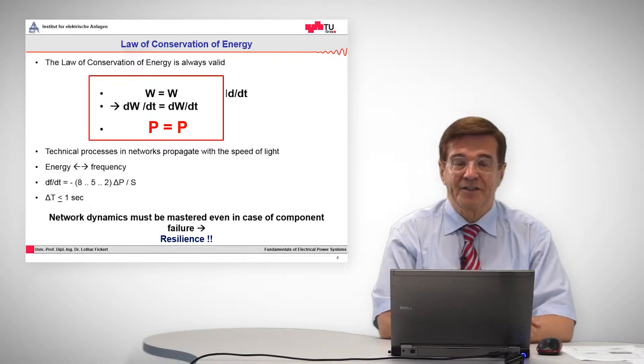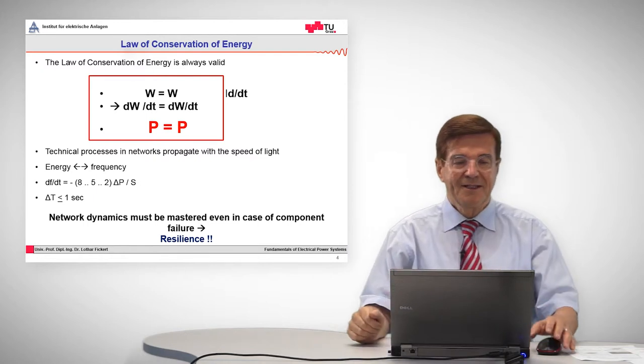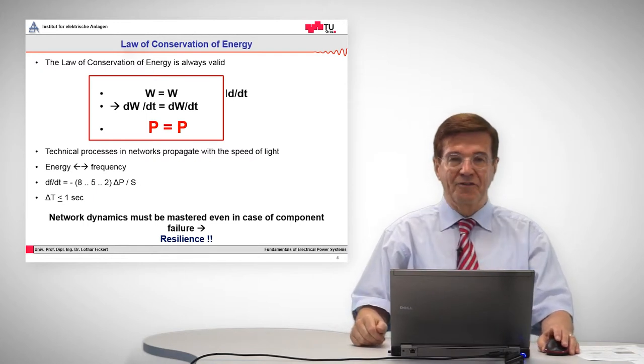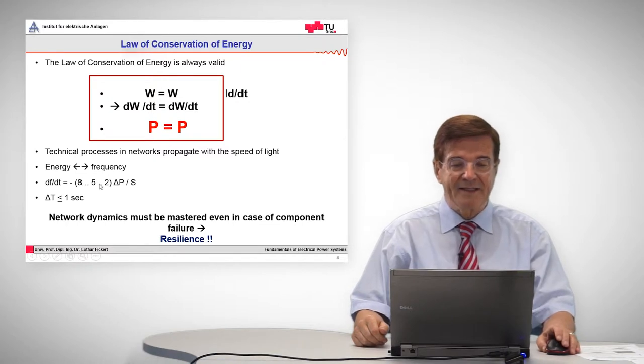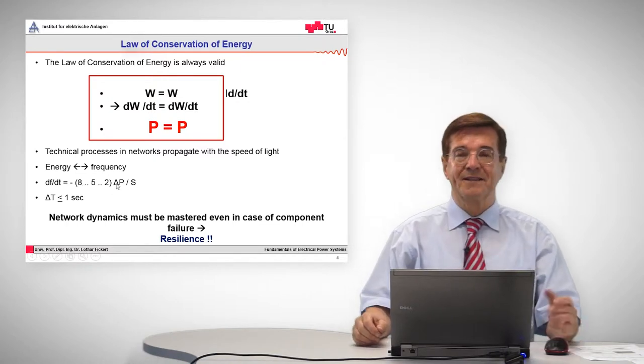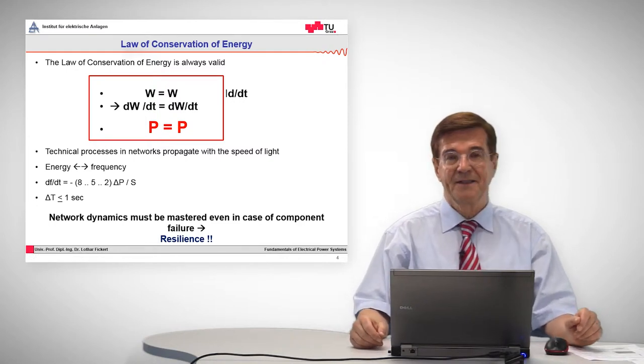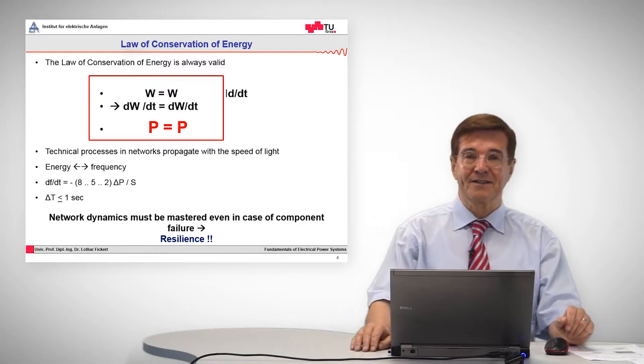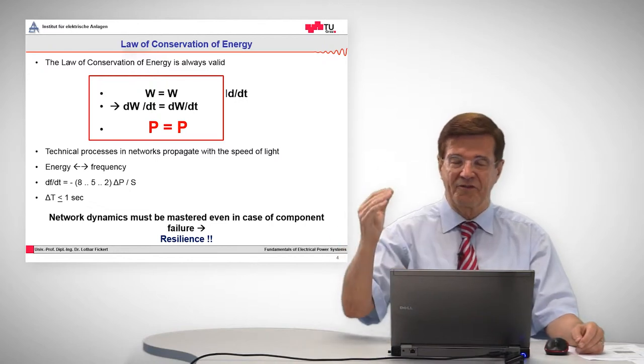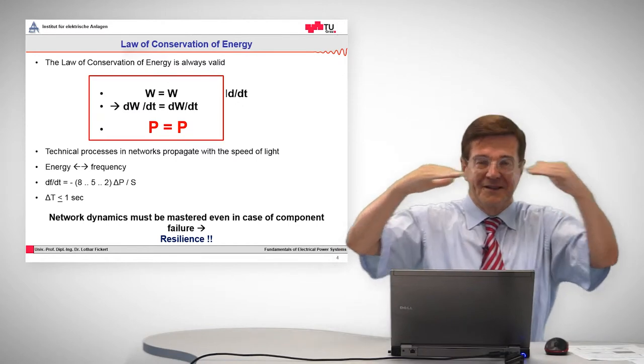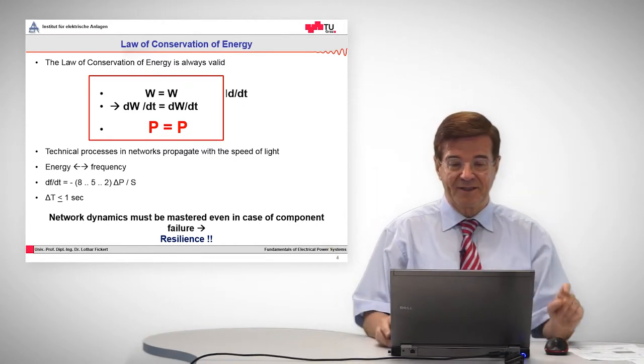When for example there is a loss of energy, a loss of power in a system, the frequency will go sharply down with the rate of change of frequency, which you can see here, which is minus eight times the deficit in per unit, and this comes out in Hertz per second. And since the regulators have to come up and cope with this rapid change of frequency in order to keep the frequency constant, they have only one second of time to do this.